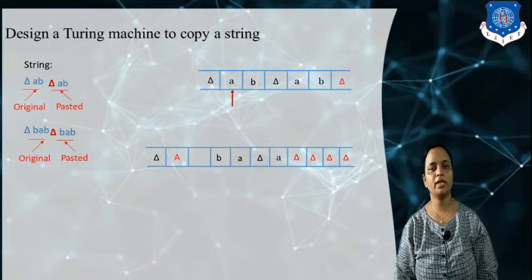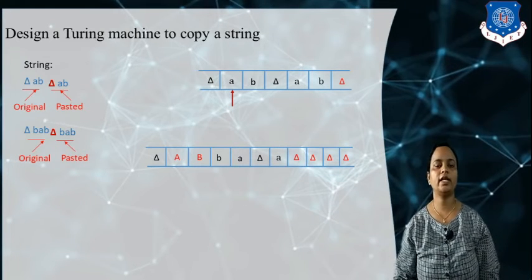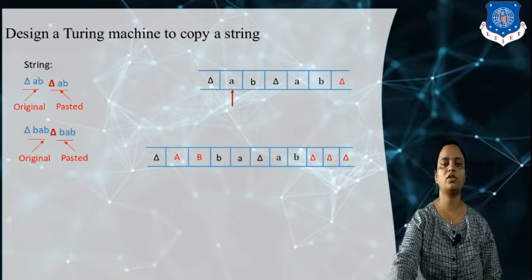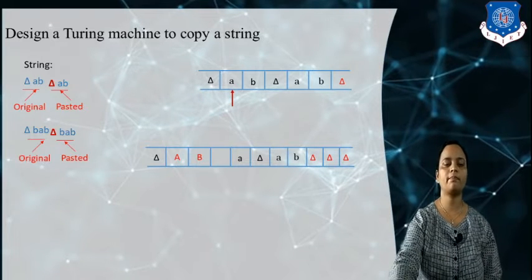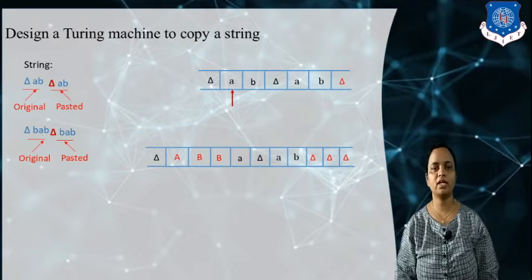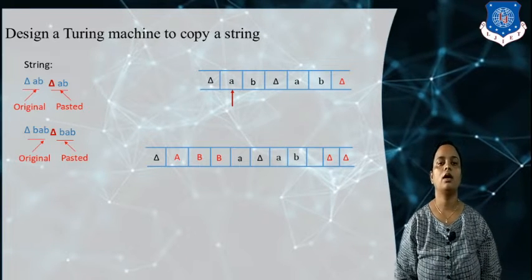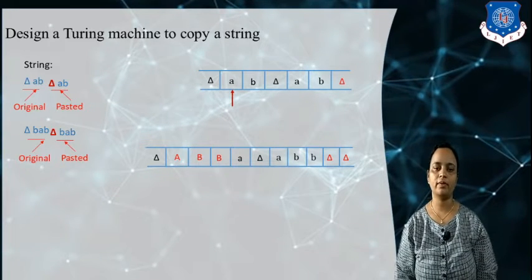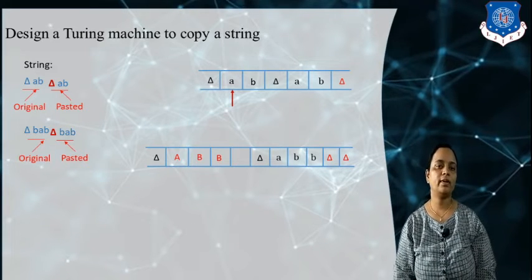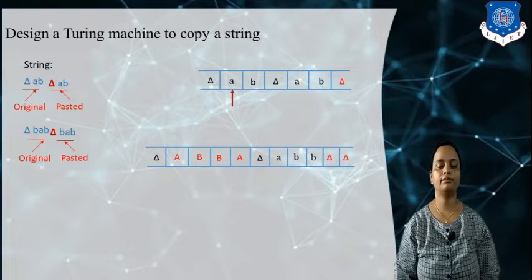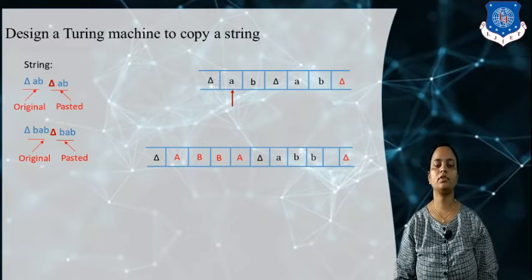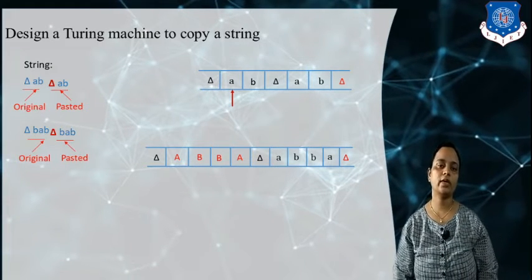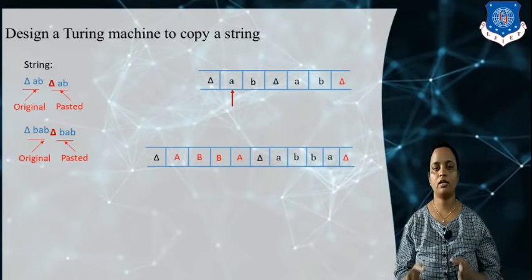Moving the tape head back to the left, we count the second symbol, small b. If it is small b, move to the right side and paste it — the third delta is replaced by small b. Then move the tape head to the left. The third symbol b is replaced by capital B. Move right, and the fourth delta is replaced by small b. Again move left — small a is replaced by capital A. Move right and replace the fifth delta with a.